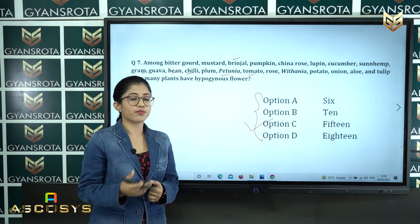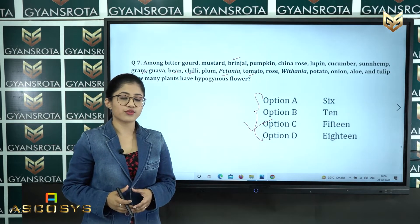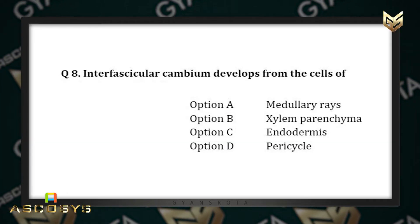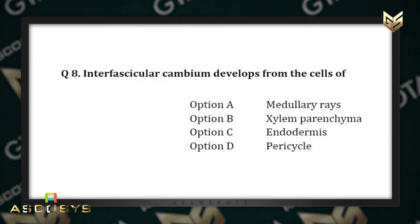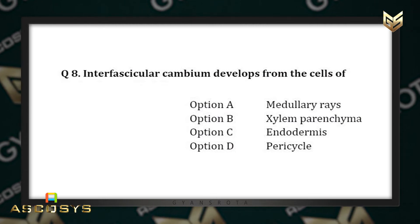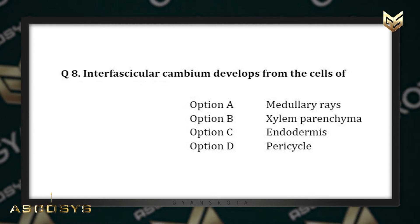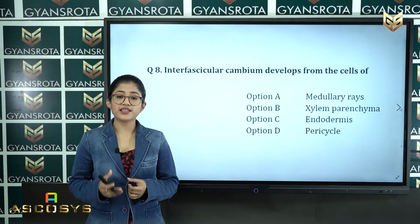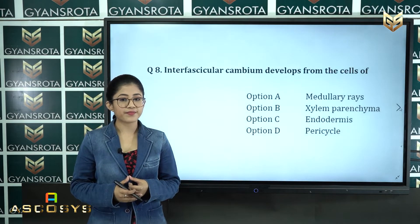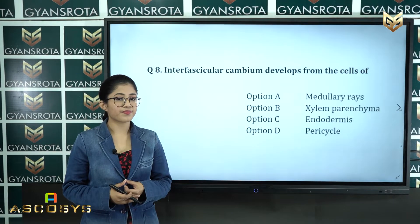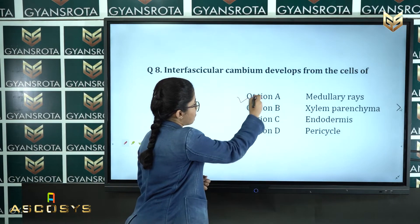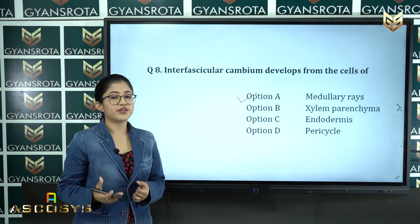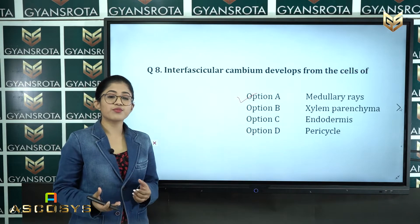Question number eight: interfascicular cambium develops from the cells of — option A: medullary rays, option B: xylem parenchyma, option C: endodermis, option D: pericycle. This is from the chapter anatomy of flowering plants. The correct answer is option A — interfascicular cambium develops from the cells of medullary rays.